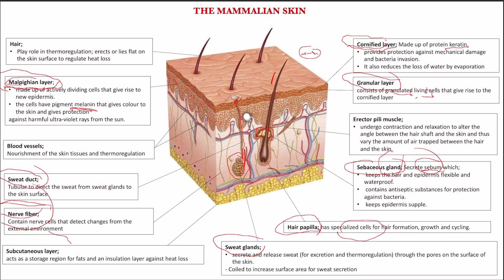Underneath the skin, we have the subcutaneous layer. This is the region of storage of fats. Sometimes we say somebody has a lot of fat in the skin — that fat has a role. The fats that form the subcutaneous layer are responsible for insulation against heat loss.